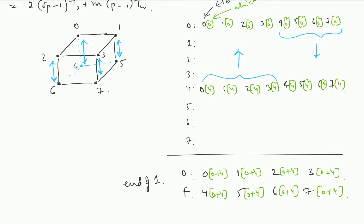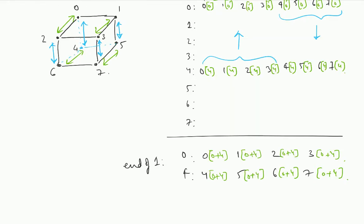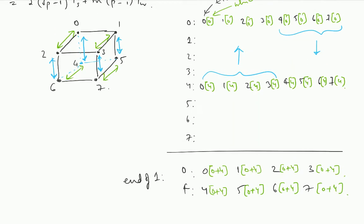In the second iteration we are going to look at the second bit and exchange along that dimension. All these communications are going to happen — the same thing happens with 1 and 5, 3 and 7, 2 and 6. I am concentrating on node 0 and seeing what happens, but similar stuff is happening on all the nodes. In the second iteration, node 0 is going to exchange data with node number 2. Let me capture what is there on node number 2 at the end of the first iteration.